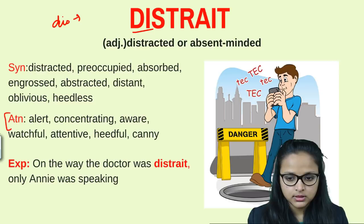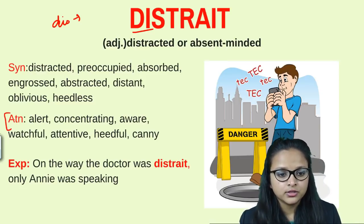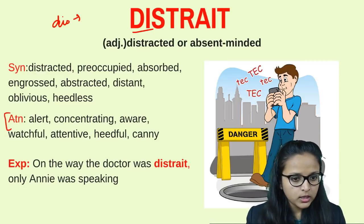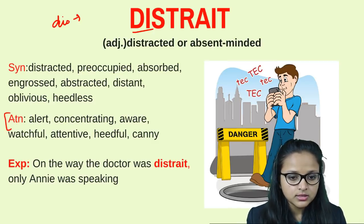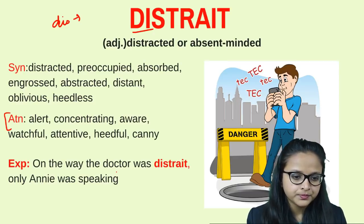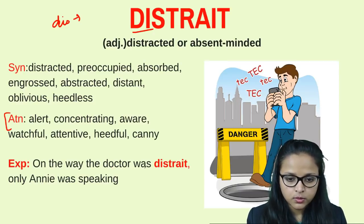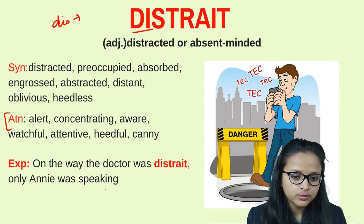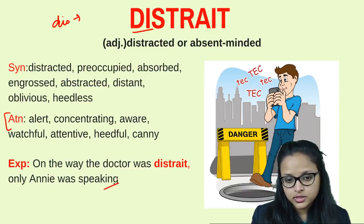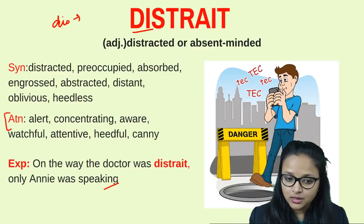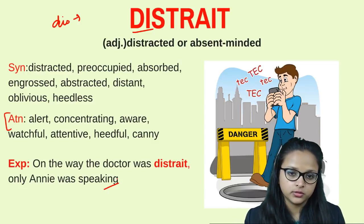Antonyms of distrait are alert, concentrating, aware, attentive, or heedful — because when you are alert, you do pay attention. Example: 'On the way, the doctor was distrait while Amy was speaking,' meaning the doctor was lost in his thoughts and not paying attention to what Amy was saying.